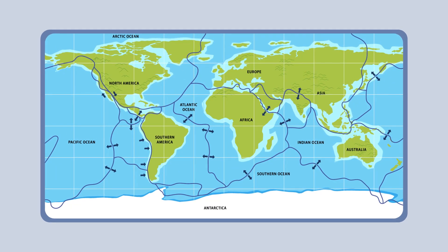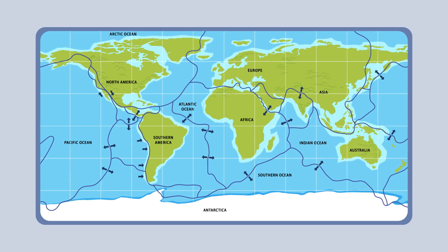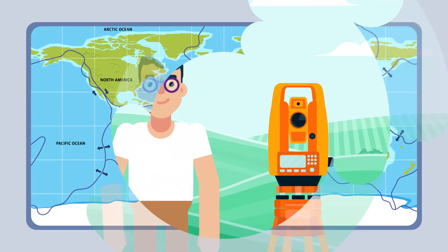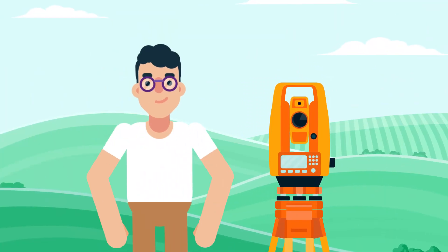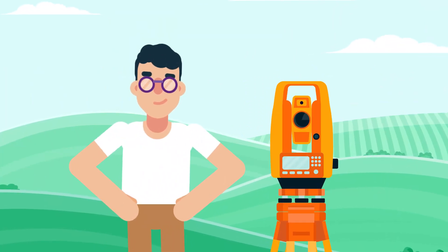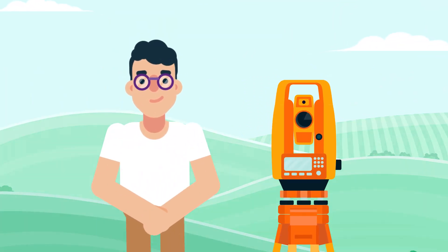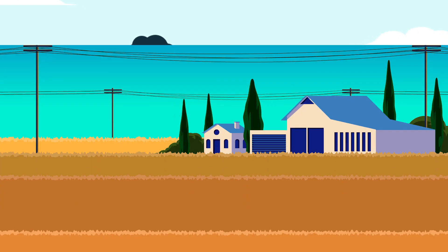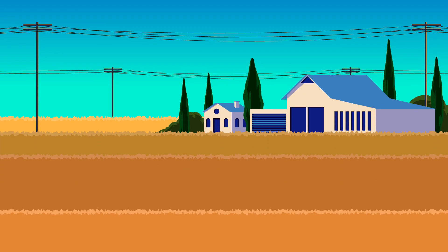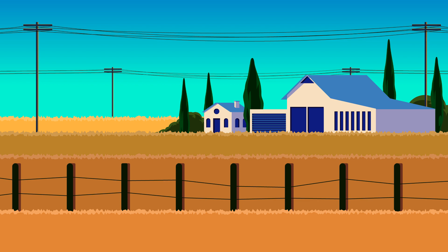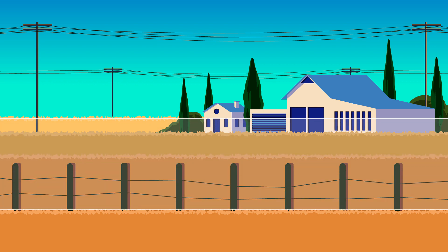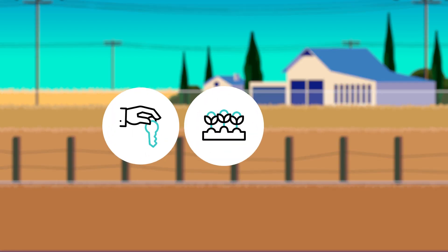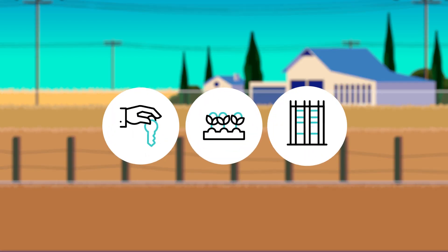In land surveying, geographical boundaries can be used to define the perimeter of a piece of land or property. These boundaries are established through the practice of land surveying, which involves measuring and mapping land to determine its legal boundaries. The primary purpose is to understand precisely where one piece of property ends and another begins, which is crucial for ownership, land use, and development purposes.